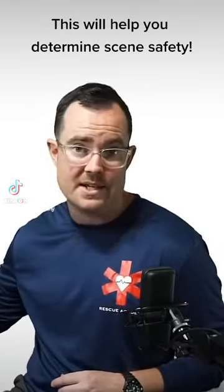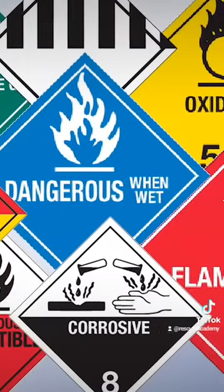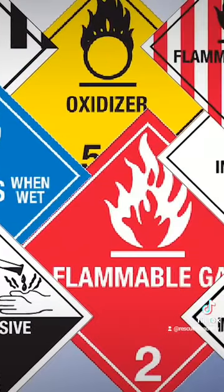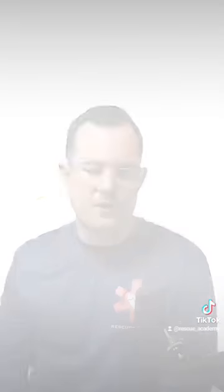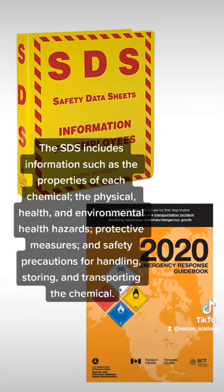Let's say that we don't have an SDS sheet and we see something like this. We got placards. We might see some sort of identification. Here's a photo of the SDS and ERG. Get familiar with what these look like because you might be requesting those on calls near you.